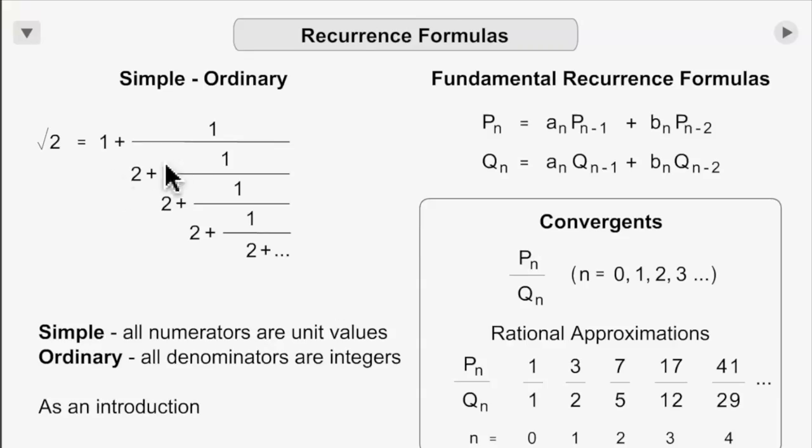Called recurrence formulas for a simple and ordinary continued fraction, where ones are the numerator of the fraction part, and all of the quotients are whole numbers, or integers at least.